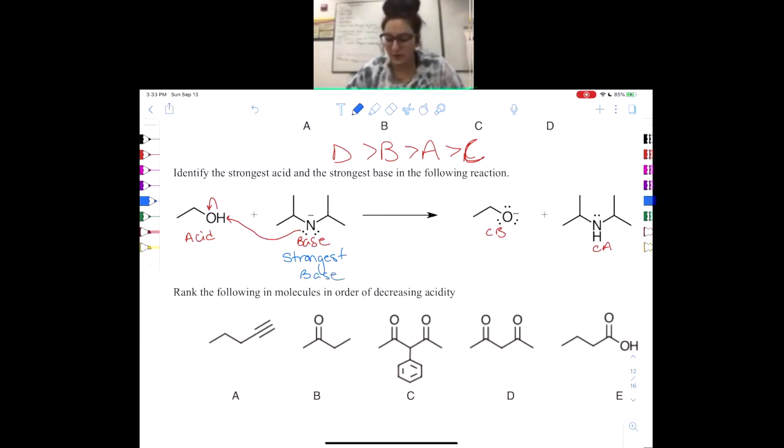And you can use the exact same logic to find your strongest acid. Between OH and NH, our OH is going to be the strongest acid, because, like we said, it really, really, really likes its electrons. So it's going to be more likely to give away a hydrogen to get its electrons back. Hopefully this makes sense.